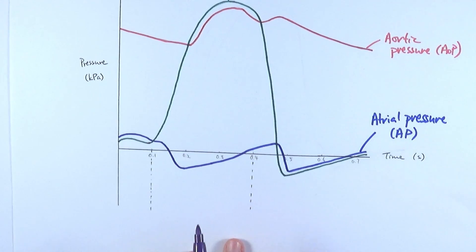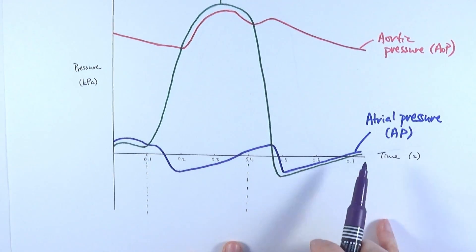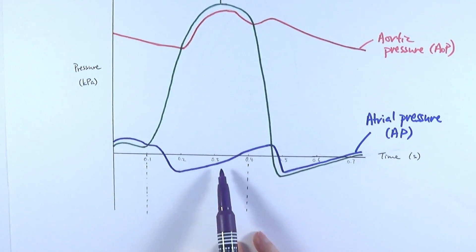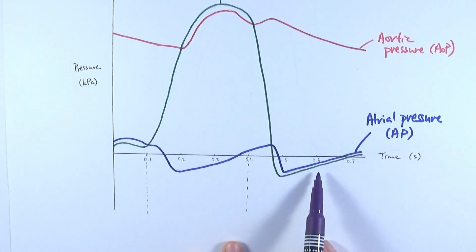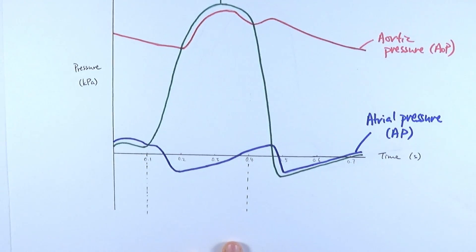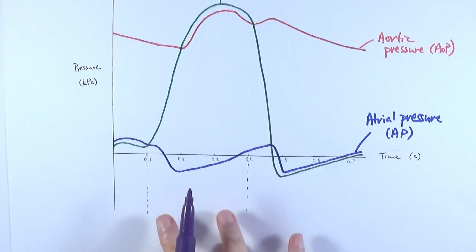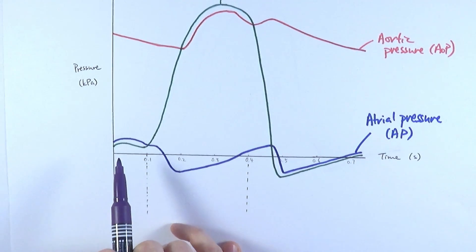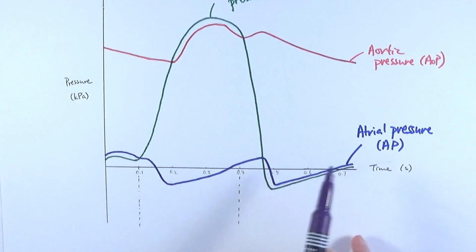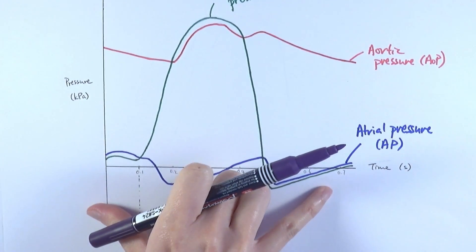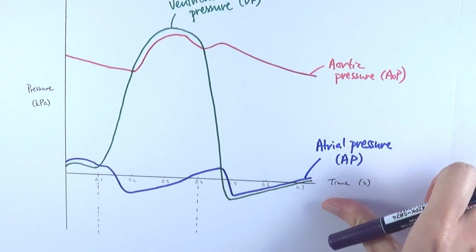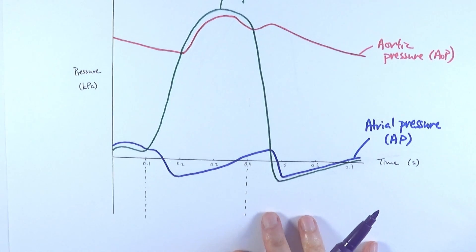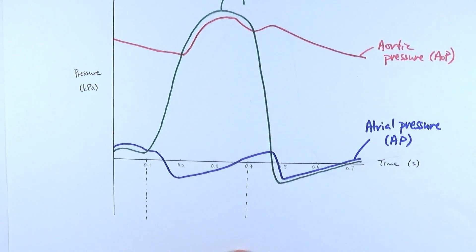There's a timeline along the bottom: 0.1, 0.2, 0.3, 0.4, 0.5, 0.6, 0.7 seconds. Normally one cardiac cycle lasts between 0.7 and 0.8 seconds, and then another one starts. It's important to remember this is a cycle — this is just one cycle, and the whole thing repeats again if we continue the graph.